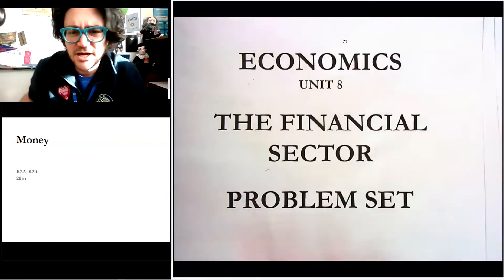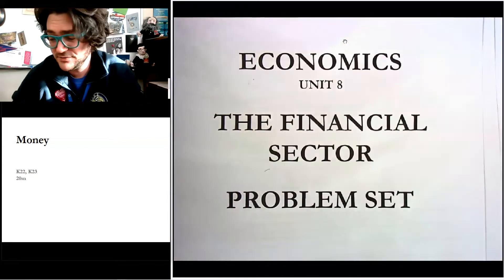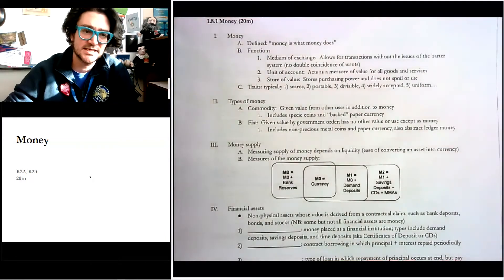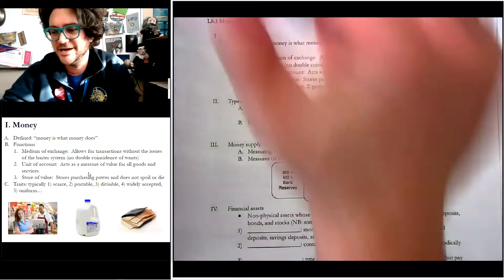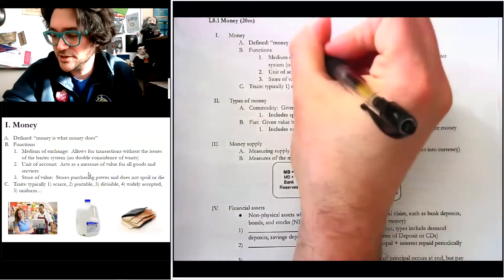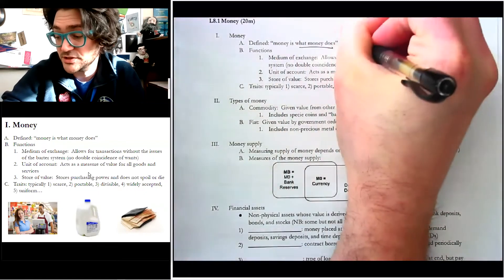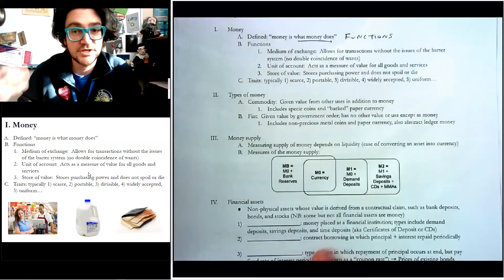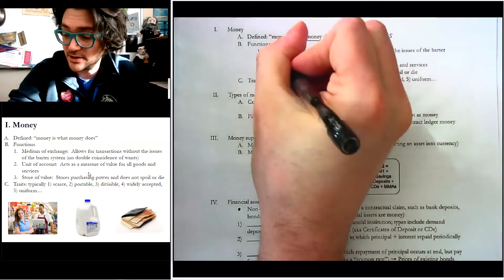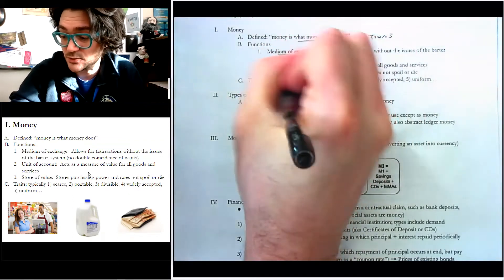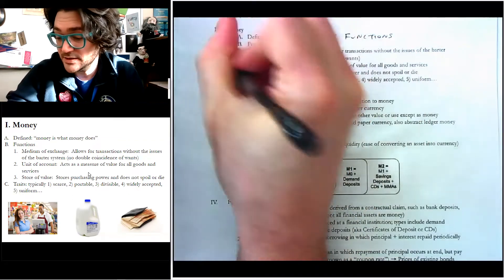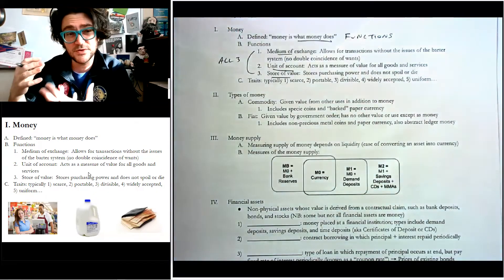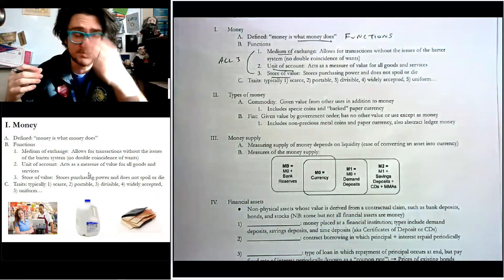We've had all this time in economics and we actually haven't even told you what money is. So money is — here you go — what money does. That's actually the definition. I know that sounds weird, but that means you have to know the functions of money in order to actually understand it. The three functions are medium of exchange, unit of account, and store of value. They have to do all three to be money.